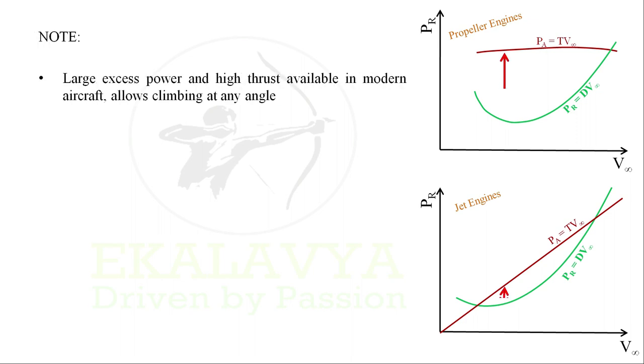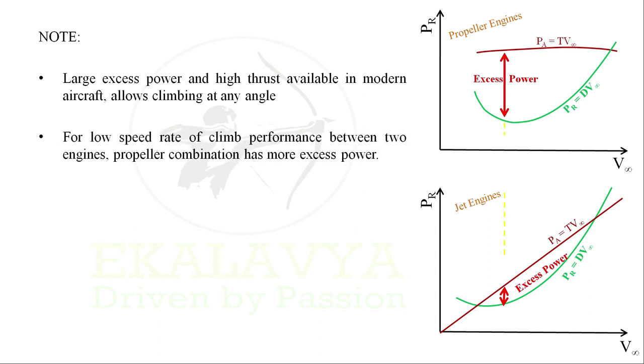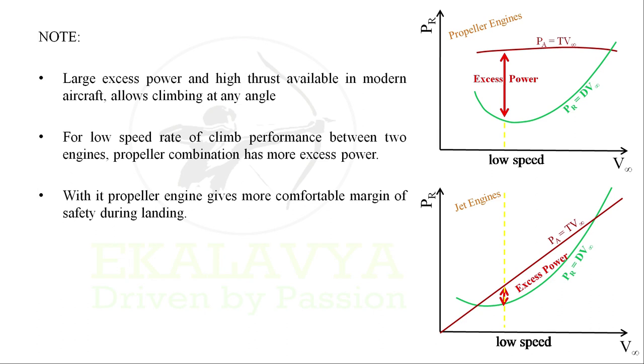Large excess power and high thrust available in modern aircraft allows climbing at any angle. For low speed rate of climb performance between two engines, propeller combination has more excess power. With which propeller engine gives more comfortable margin of safety during landing operations.